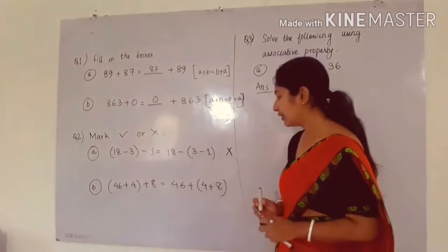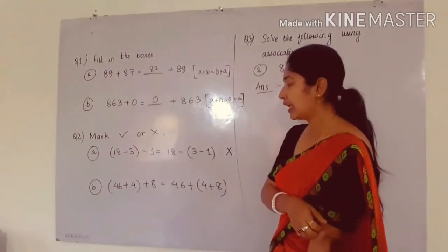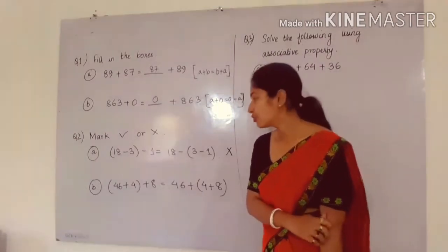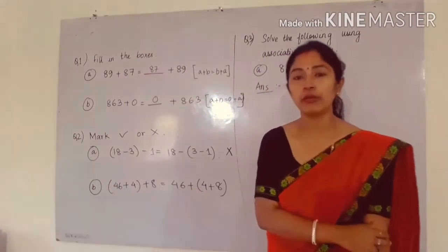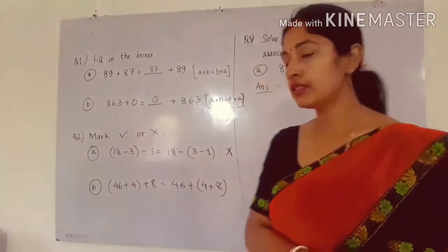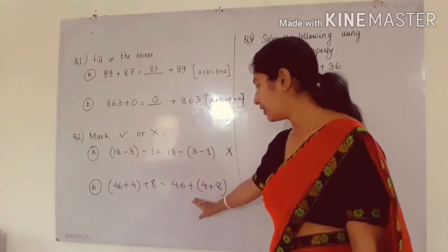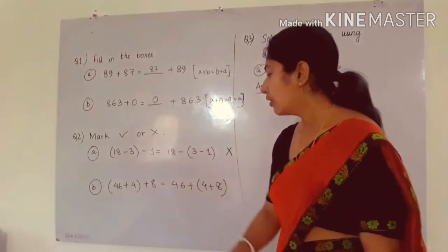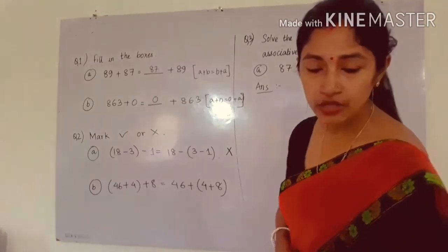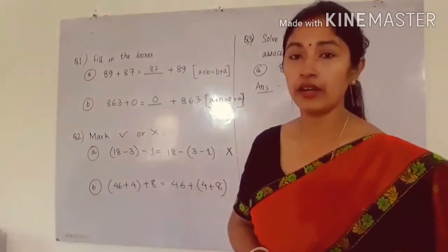Next, come to number B. In number B, A and B are both the same — only there is a difference of symbol. In A we have the subtraction symbol, but in B we have the plus symbol. That means here addition is taking place.